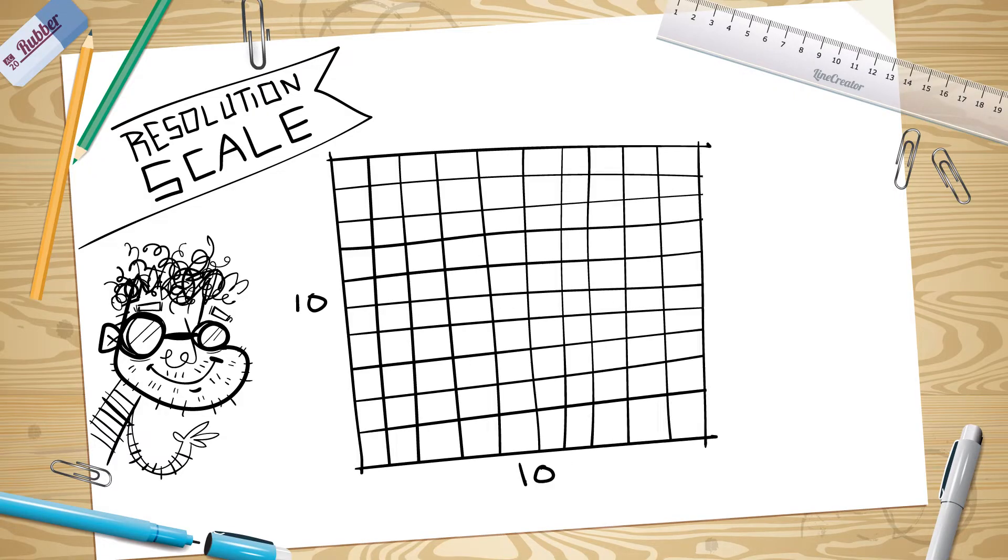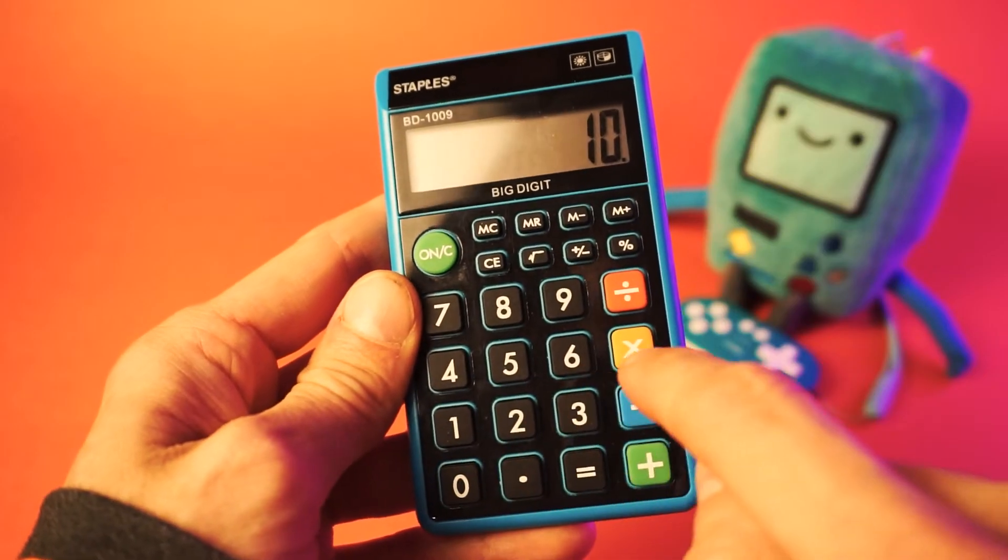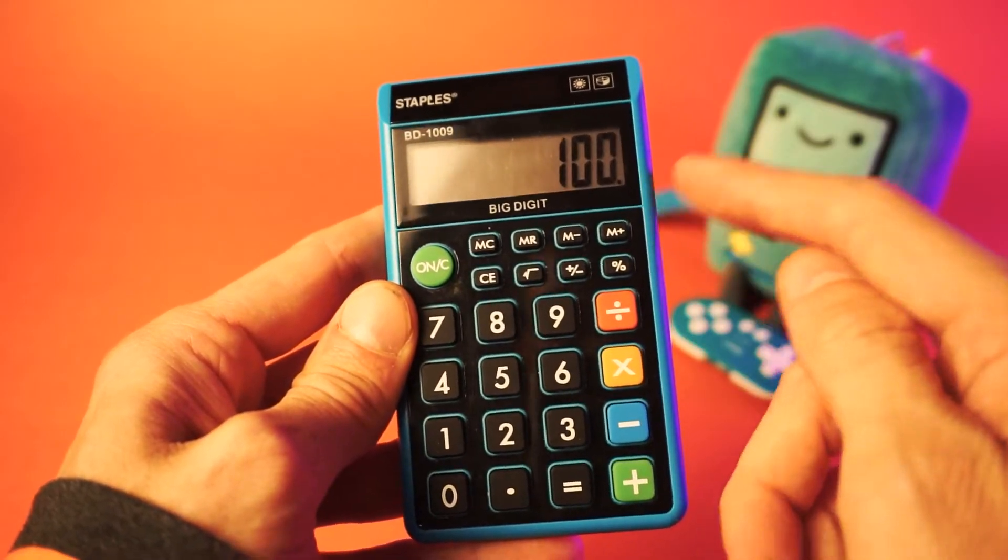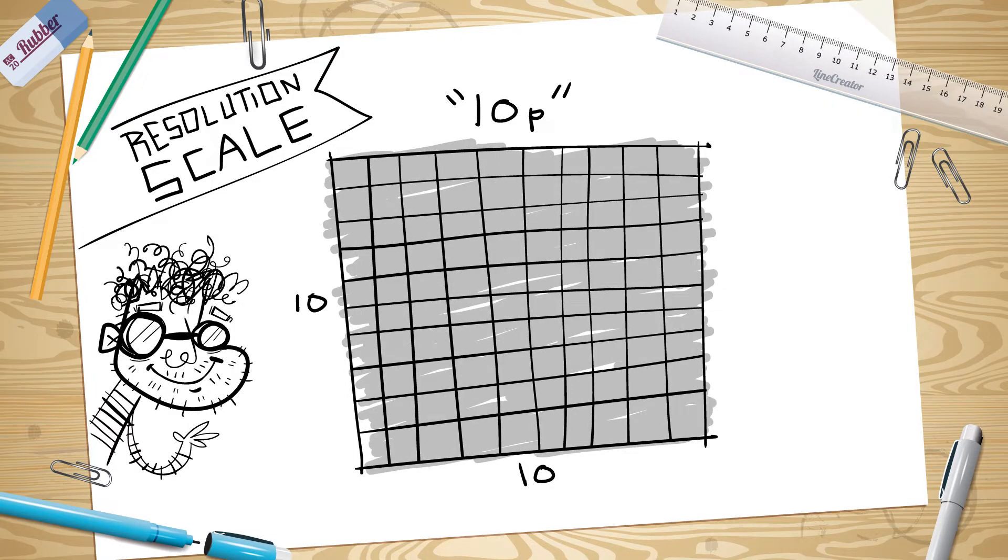Okay, so picture this. We have a grid, 10 by 10. We're going to call this 10p. Let's count the pixels in this 10p grid. 1, 2, 3, 4, 5, 6, 7, 8. Wouldn't it be funny if I actually sat here counting every square? Well, let's use the magic of technology to count them for us. 10 times 10, that's 100. Okay, 100 pixels. So our 10p grid has 100 pixels in it.